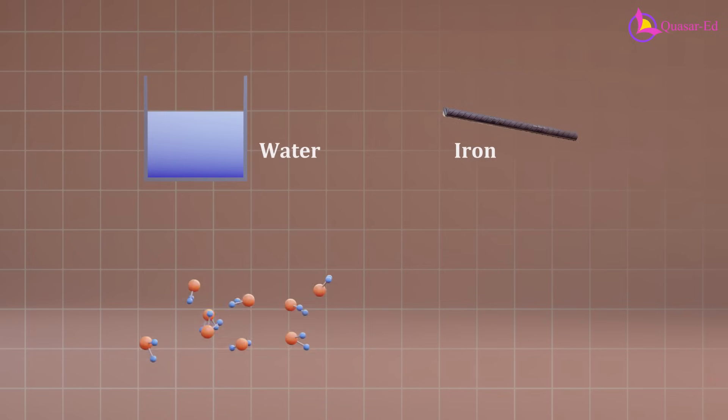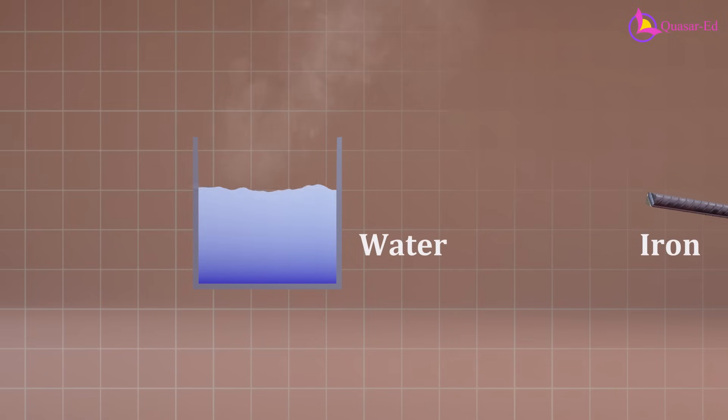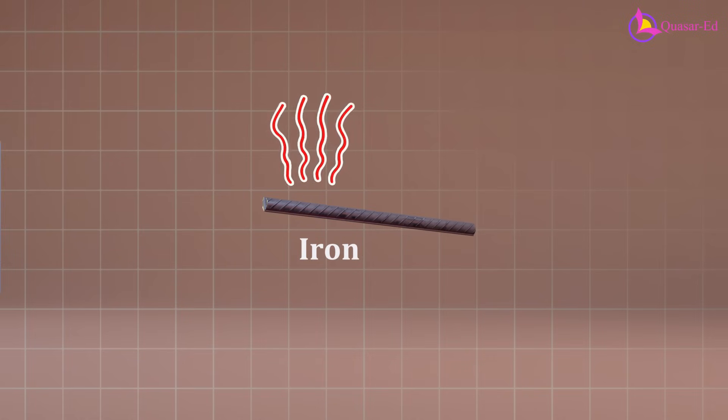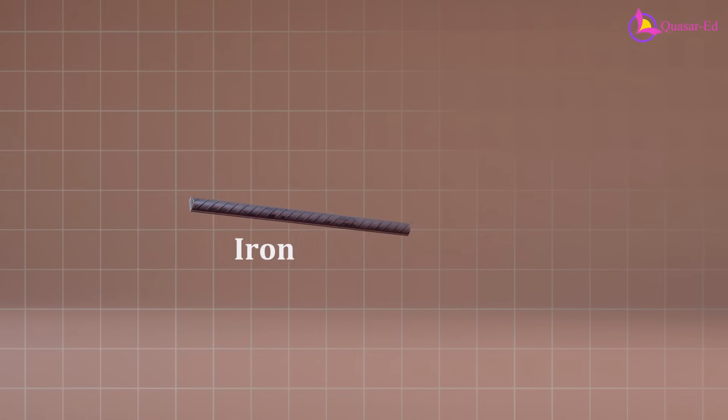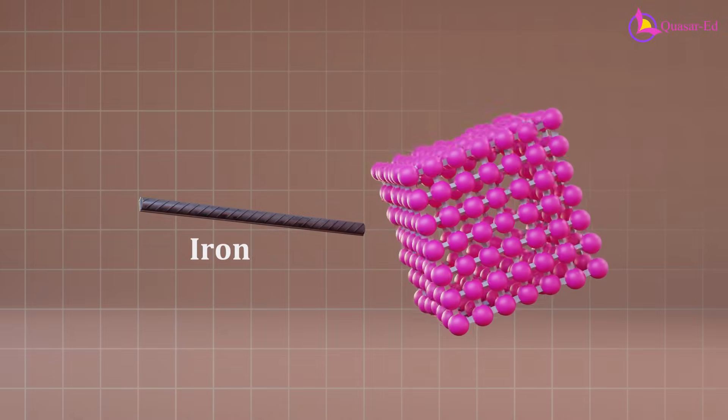Different materials are made up of different atoms, each with a unique capacity for heat. While water boils at 100 degrees Celsius, an iron rod doesn't undergo any noticeable change at that temperature. However, even in the iron, heat still causes its atoms to vibrate.